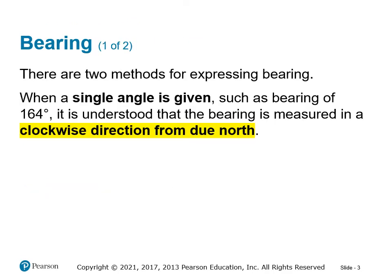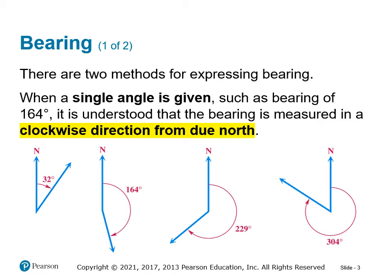When talking about bearing, there are two different methods for expressing it. The first is when just a single angle is given, such as a bearing of 164 degrees. When it's just a single angle, it's understood that the bearing is measured in a clockwise direction from due north. This is a change from what we've been doing — measuring angles counterclockwise from the x-axis. Now we're measuring from the y-axis in a clockwise direction. Bearing is its own kind of creature.